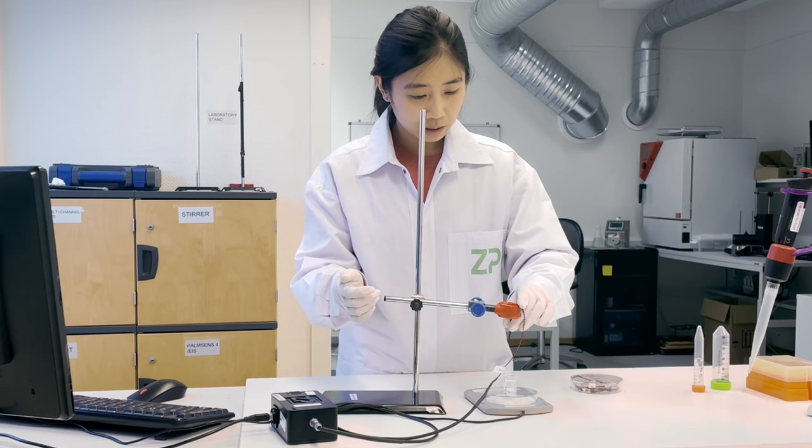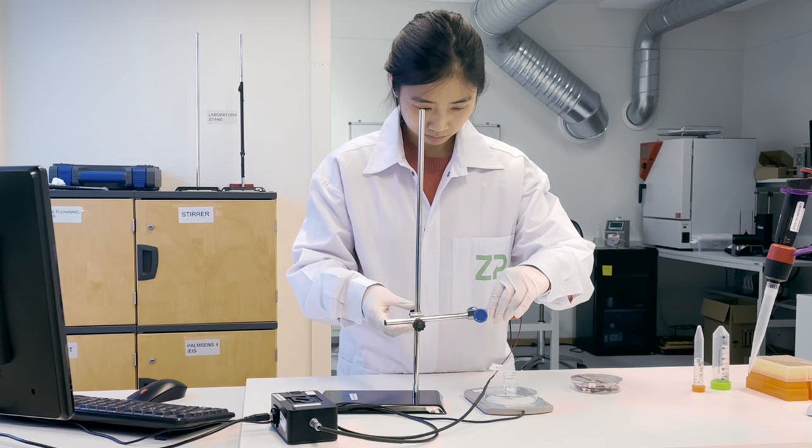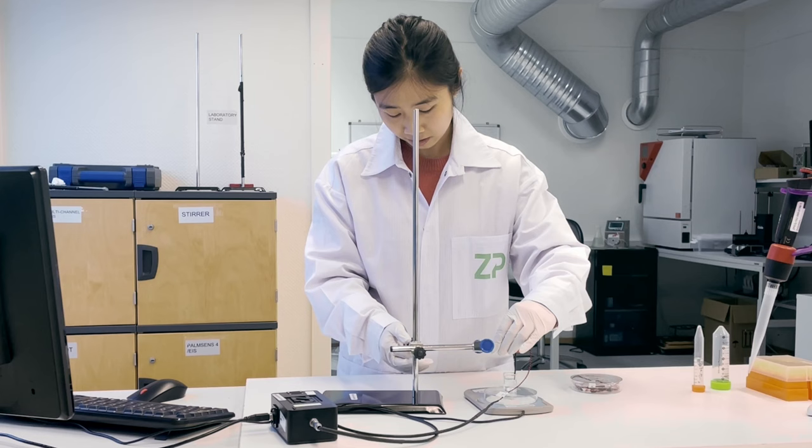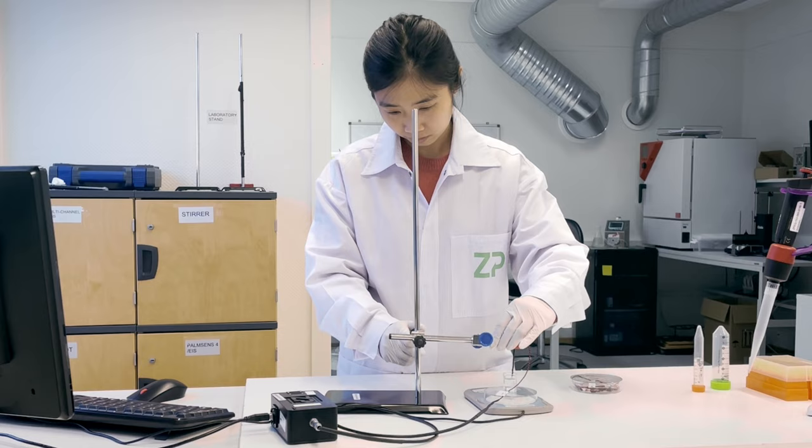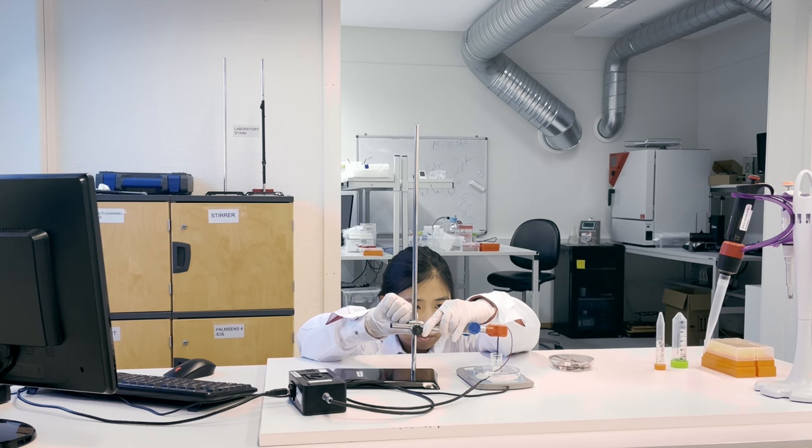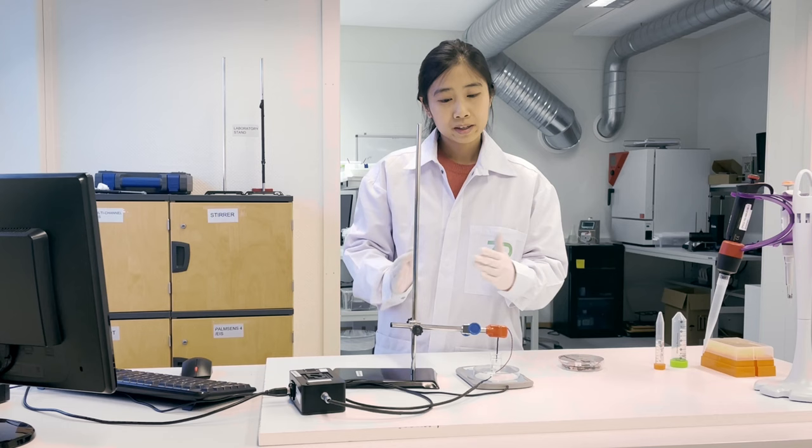Now we need to lower our wire sensor into the solution. Make sure the wire is not in contact with the magnetic stirrer, otherwise it will generate huge electronic noise. Now I can see the sensor is inside the solution but not in contact with the magnetic stirrer.